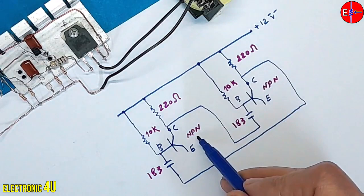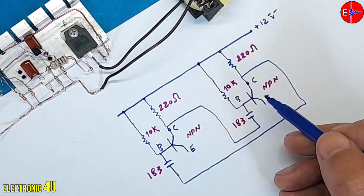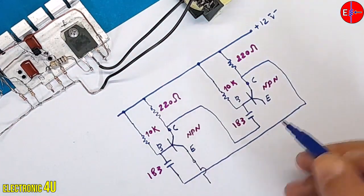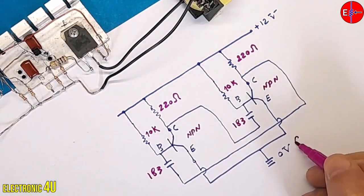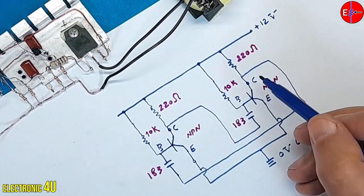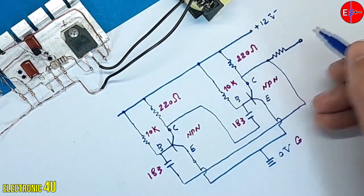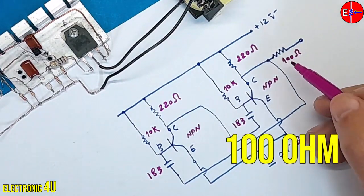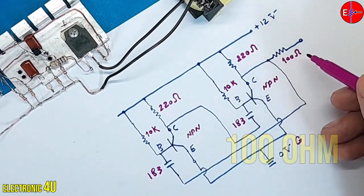As these transistors are NPN, the emitters are connected and subsequently linked to ground, which signifies zero volts. The output of this oscillator circuit is observed at the collector of this transistor.